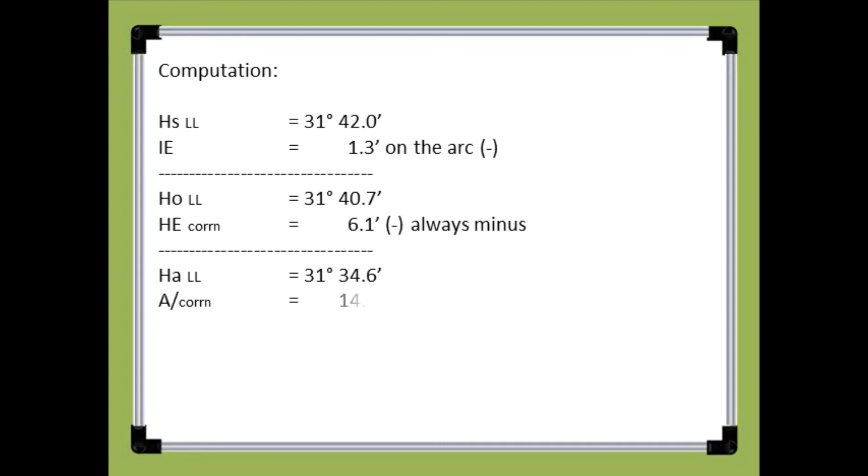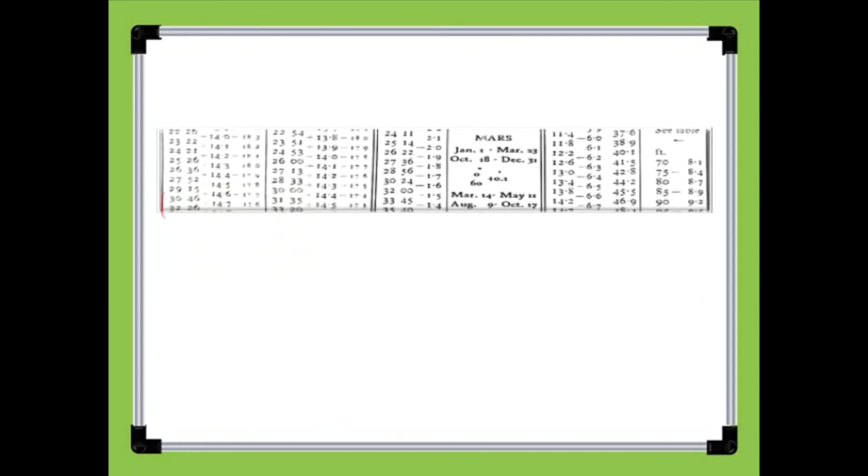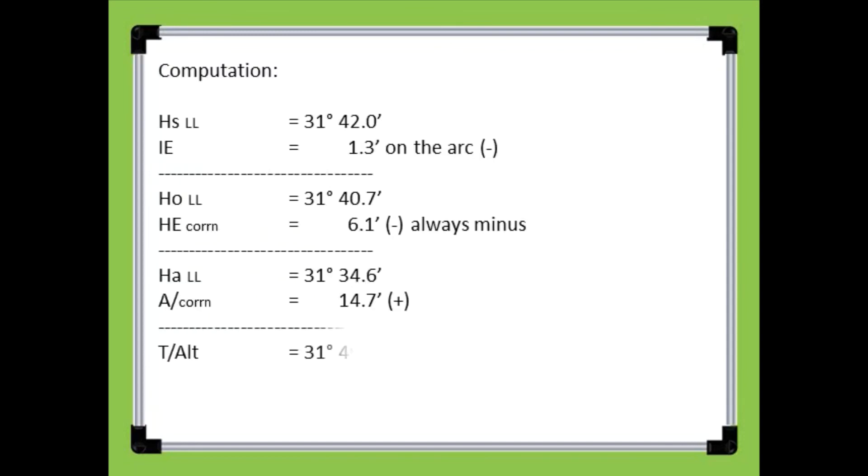Add the sextant apparent altitude correction at lower limb which is 14.7 minutes. The result is the sextant true altitude of the sun at lower limb which is 31 degrees 49.3 minutes.